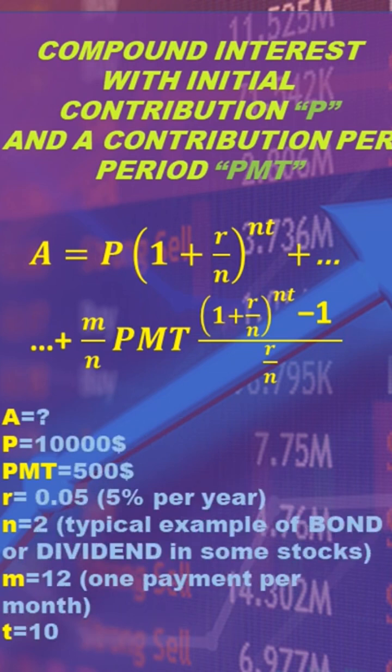Let's consider an example where the initial capital P equals ten thousand dollars. Let's suppose we periodically pay PMT equals five hundred.